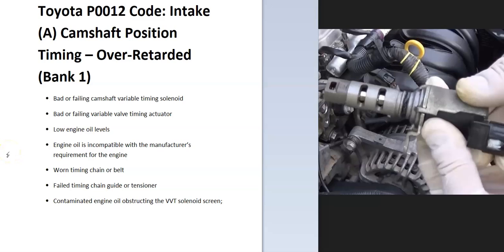Hello all. Today I'm talking about a Toyota with the P0012 code — what it is and how you go about fixing it. So what is a Toyota P0012 code? It's the intake A camshaft position timing over-retarded bank one. The on-board computer is seeing an issue with the timing, and there are several components that control this, so they have to be looked at to know what the problem is.